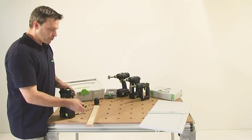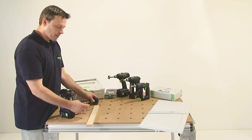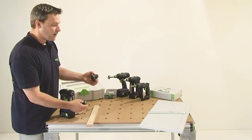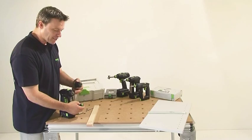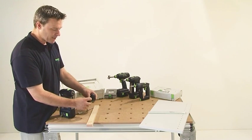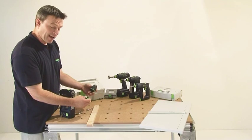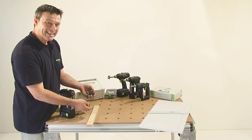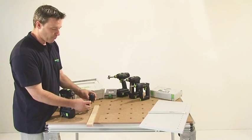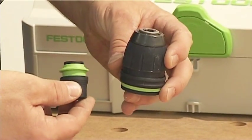When you have a close look at the Centrotec chuck, you can see that it has only the half length of a standard chuck. It has a very short design. It is 80% lighter as well and therefore ideal for longer working hours.